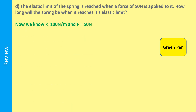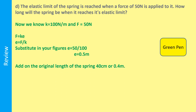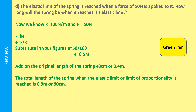We know the spring constant k is 100 and the force is 50 Newtons. Using F = ke, rearranged to e = F divided by k, substituting in gives e = 0.5 metres. At this point, be careful — you've worked out the extension, not the total length. To find the total length you need extension plus original length. The original length was 40 centimetres, so the total length is 40 plus 50 equals 90 centimetres, or 0.9 metres.